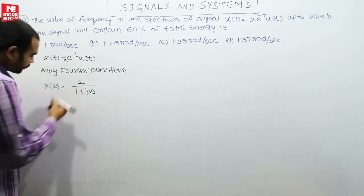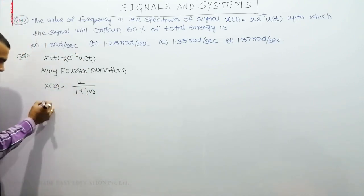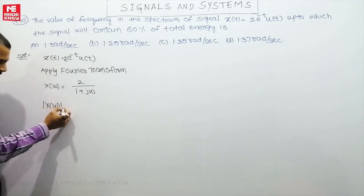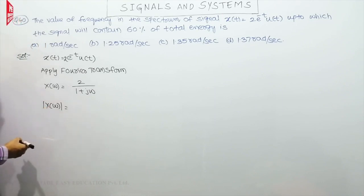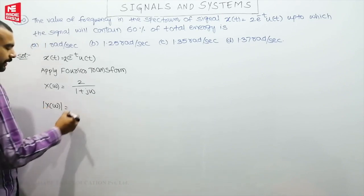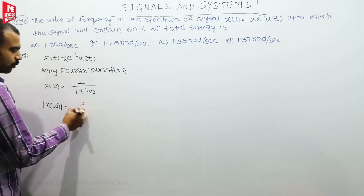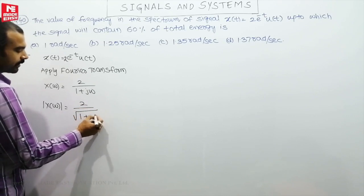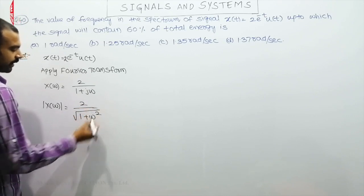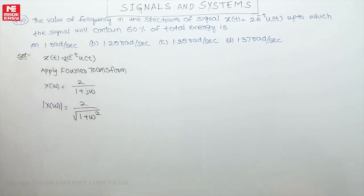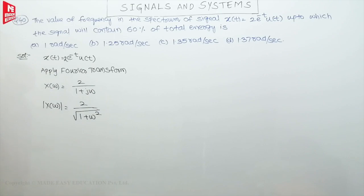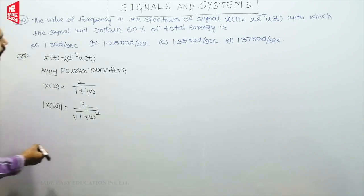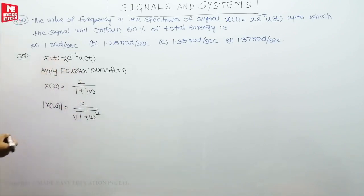Next, the magnitude of X(ω): |X(ω)| is given as 2 divided by the square root of (1² + ω²), which gives us 2 divided by the root of (1 + ω²). This is the Fourier transform we have.